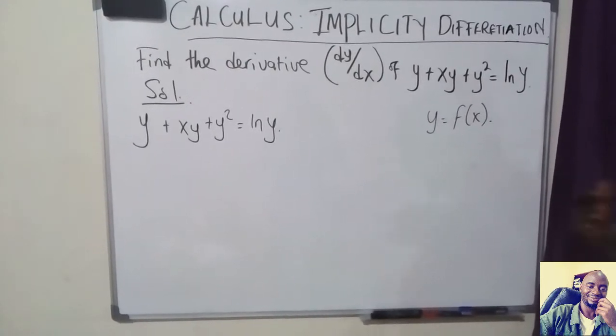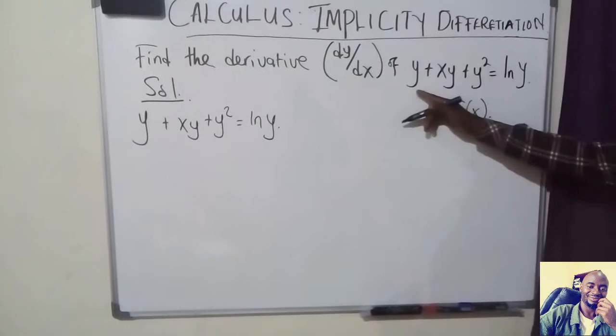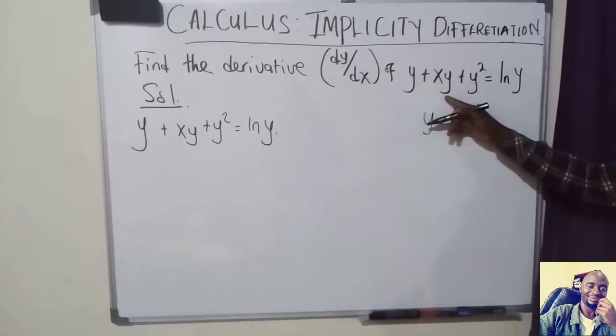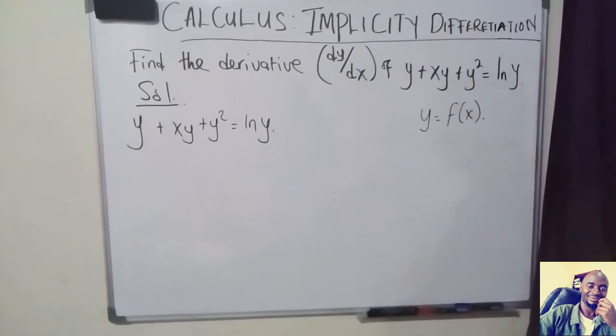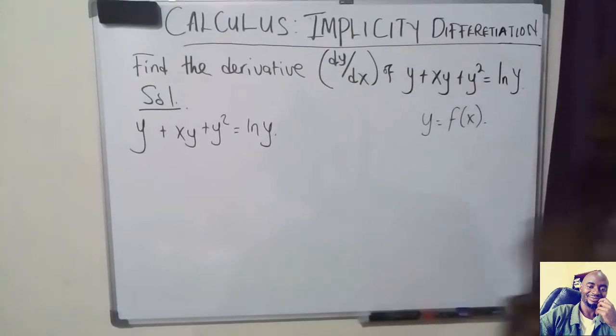So we are going to find dy over dx of each term — dy over dx of this, dy over dx of that, dy over dx of this and that. So let's just do that.